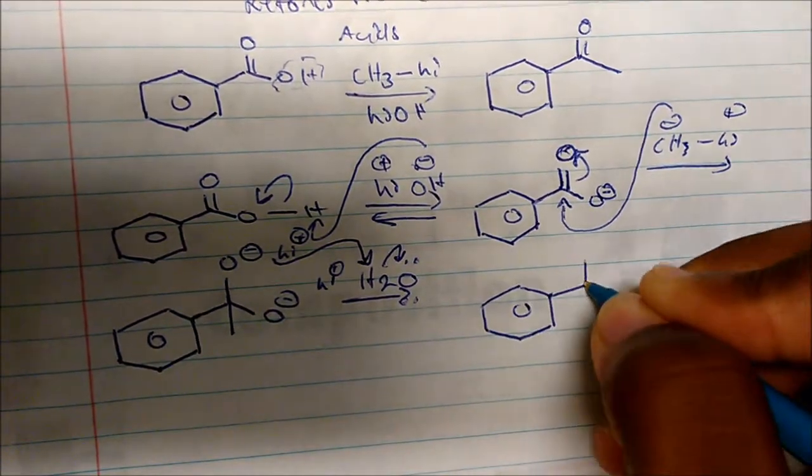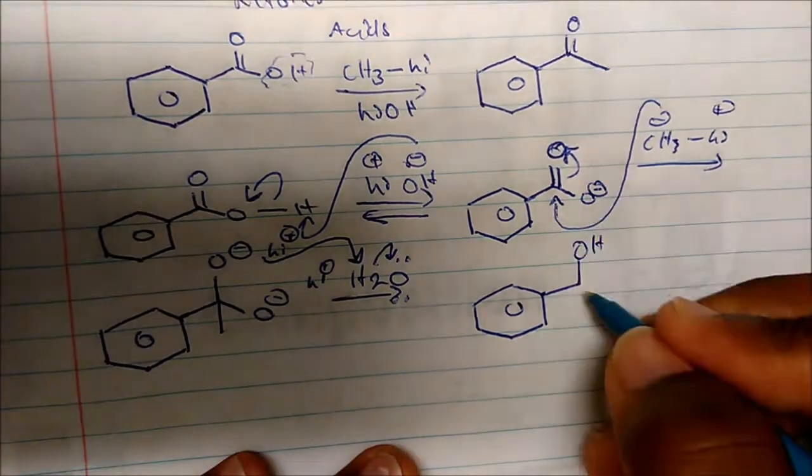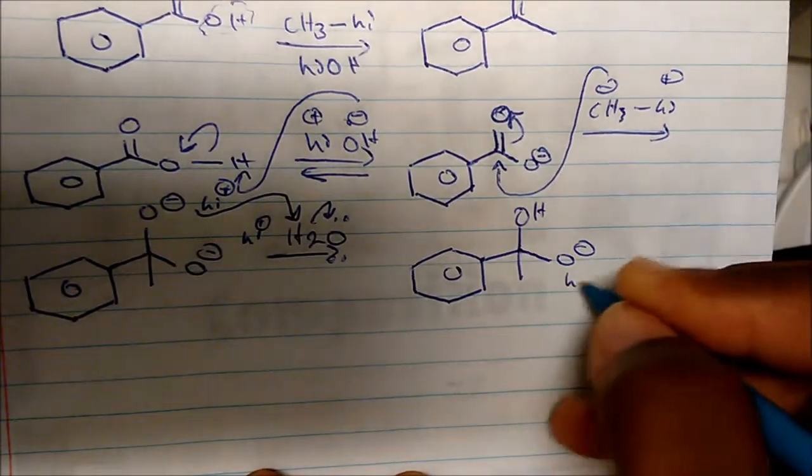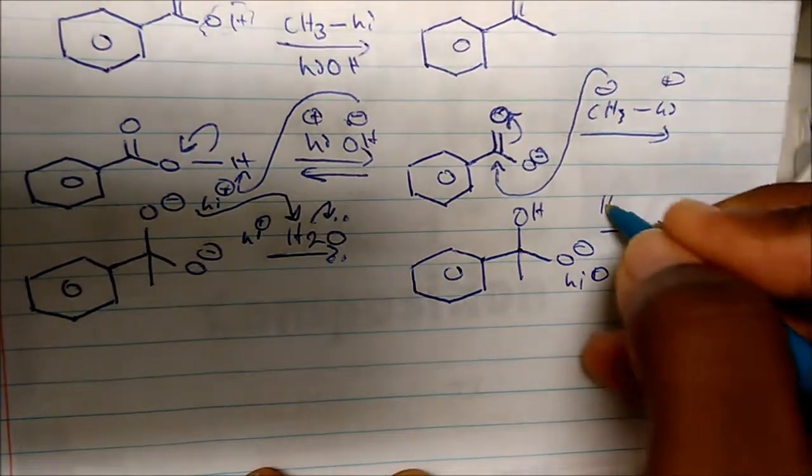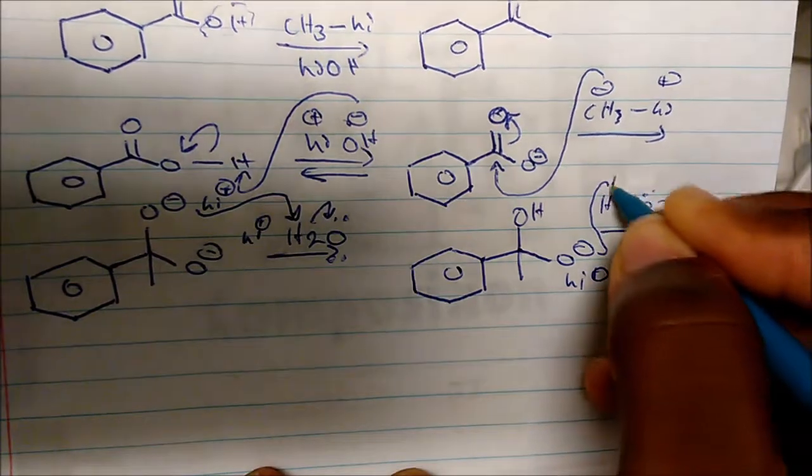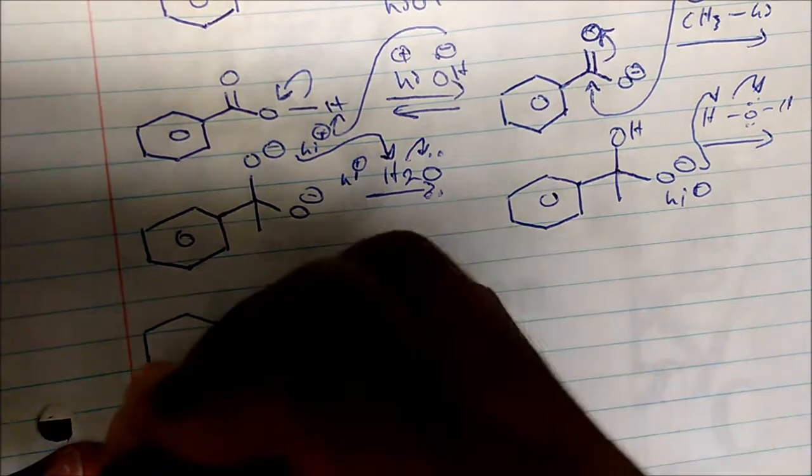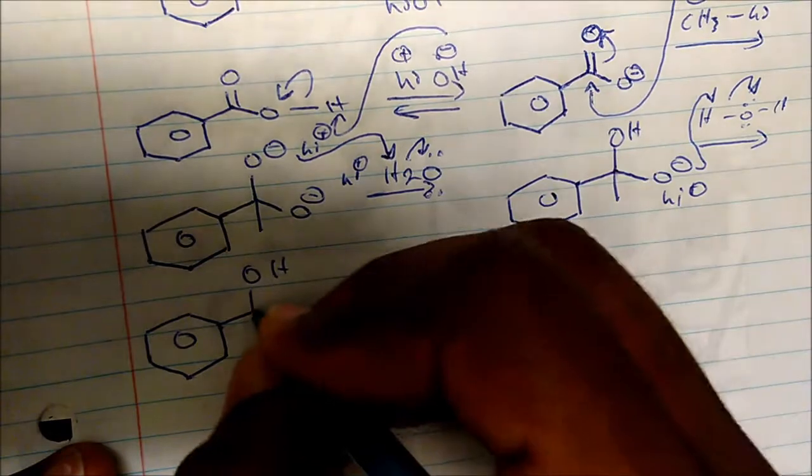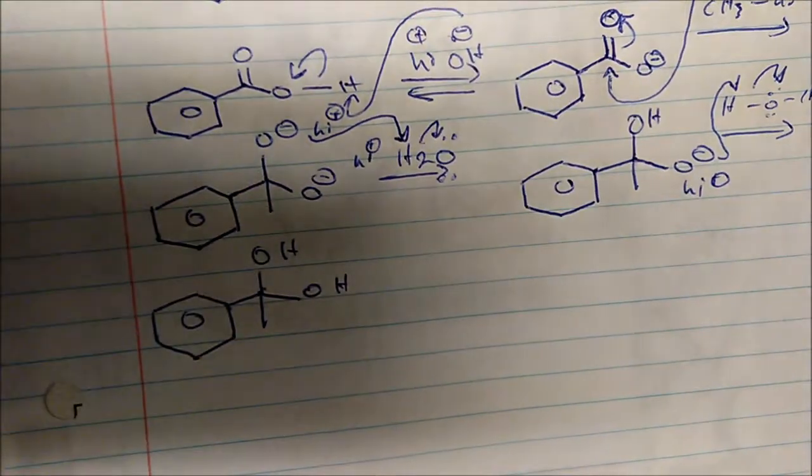So now I'll get to a point where I have an alcohol, I still have this R group, and then I have another O- with a lithium plus charge that's balancing out. Again, remember, we have plenty of water in solution, so this will also come, get a hydrogen, and reform hydroxide in solution. And so now we're back to basic conditions in a neutral state. So we have the di-alcohol with our R group.